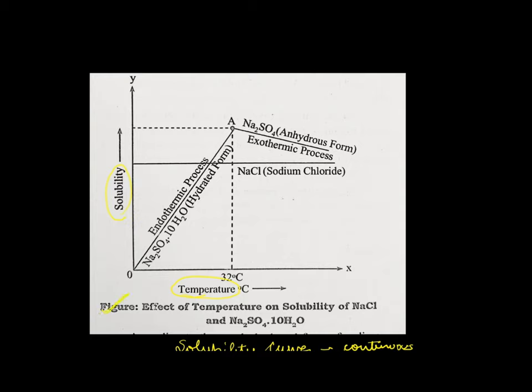Here you can find a curve showing the effect of temperature on solubility of two different drugs — one is sodium chloride and another is sodium sulfate. For some substances there is no effect of change in temperature on solubility, and the most common example is sodium chloride. Sodium chloride's solubility does not change with temperature; if I plot it, I will get a straight line parallel to the temperature axis on the x-axis.